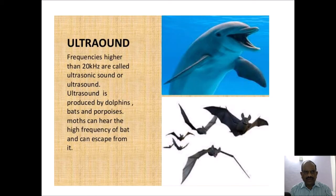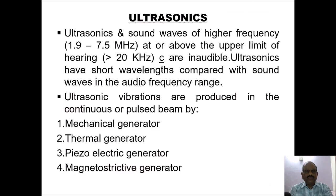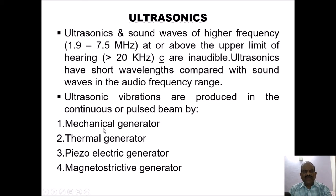Frequencies higher than 20 kHz are called ultrasonic sound or ultrasound. Ultrasound is produced by dolphins, bats, and porpoises; moths can hear the high frequency of bats and can escape from them. Ultrasonic sound waves have frequencies from 1.9 to 7.5 MHz, at or above the upper limit of hearing (more than 20 kHz), which are inaudible. Ultrasonics have short wavelengths compared with sound waves in the audio frequency range. Ultrasonic vibrations are produced in continuous or pulsed beams by biomechanical, thermal, piezoelectric, and magnetostrictive generators.